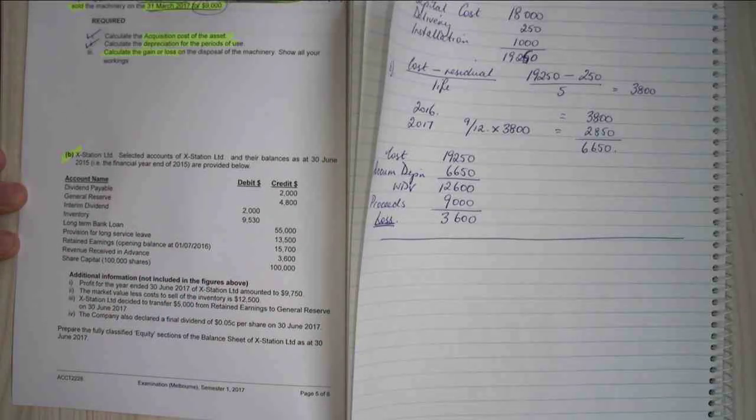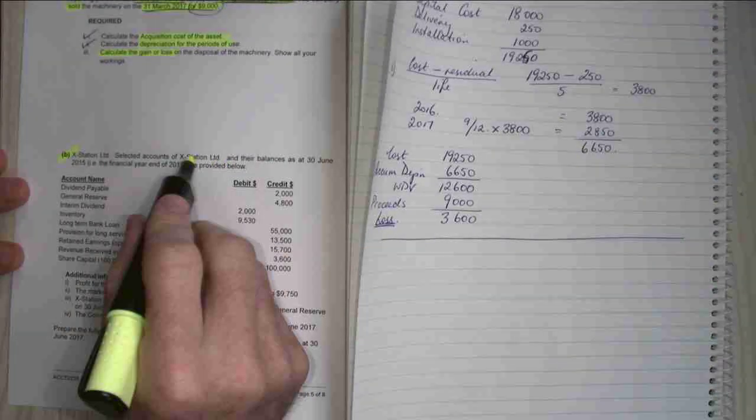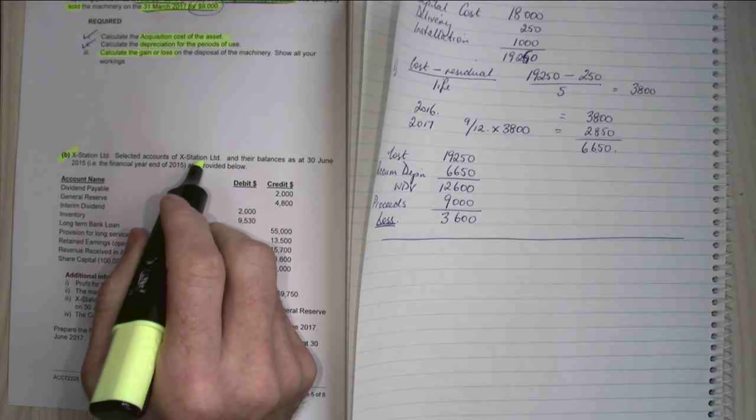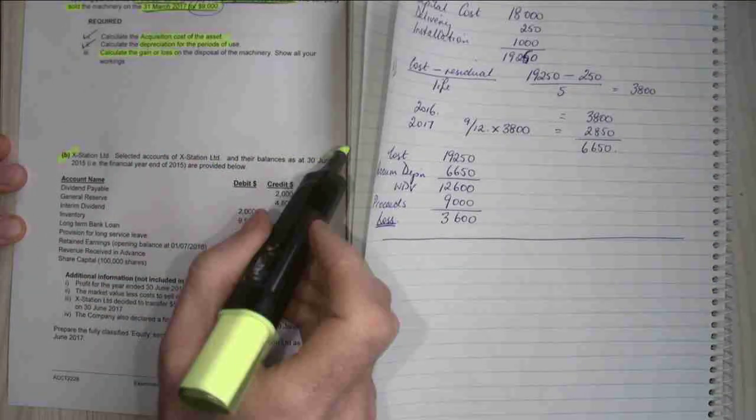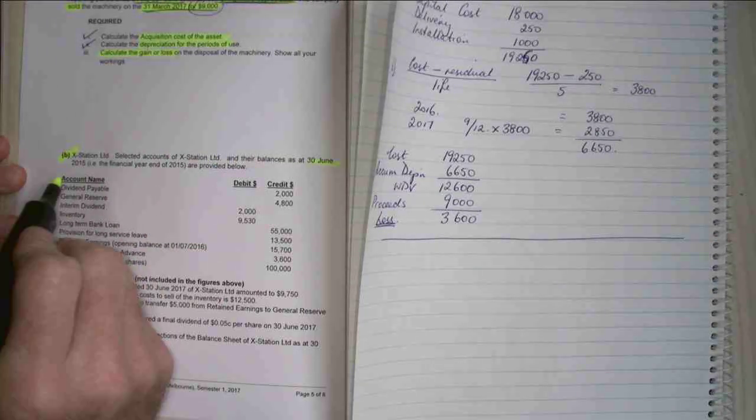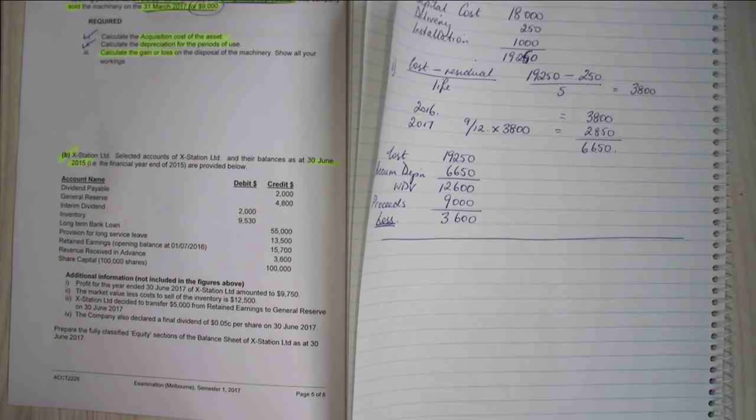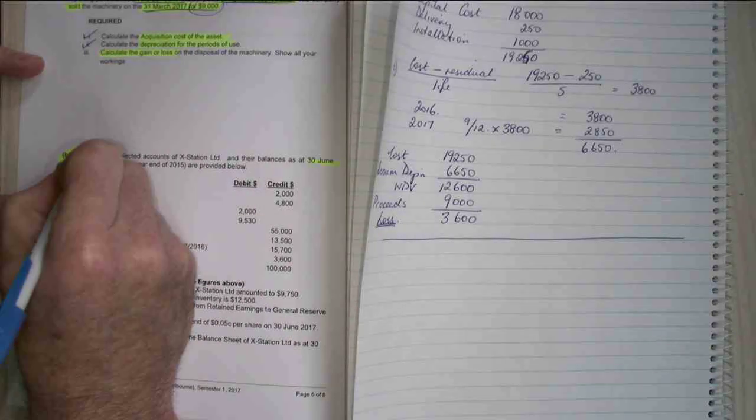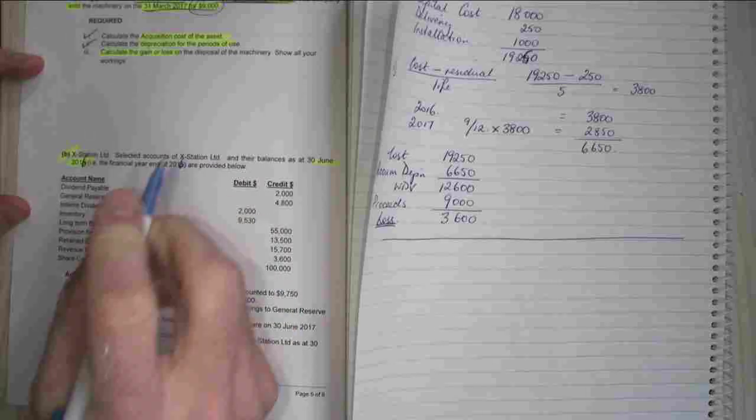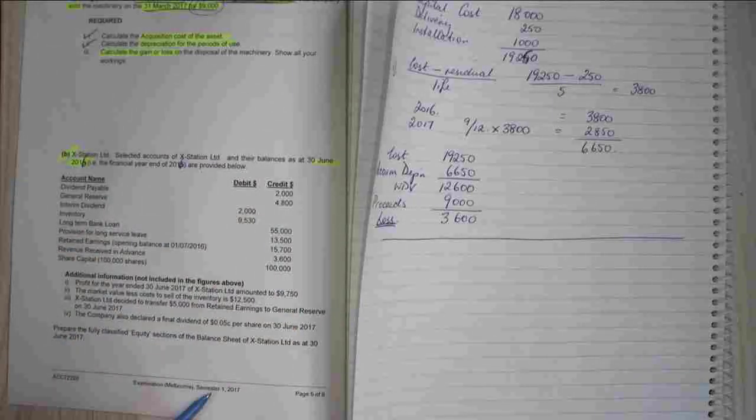Okay, let's look at exercise B which says these are selected accounts from X Station Limited. And these are the balances of the 30th of June, actually 2016, that should say 2016. So that should be 2016 as well, there's an error.